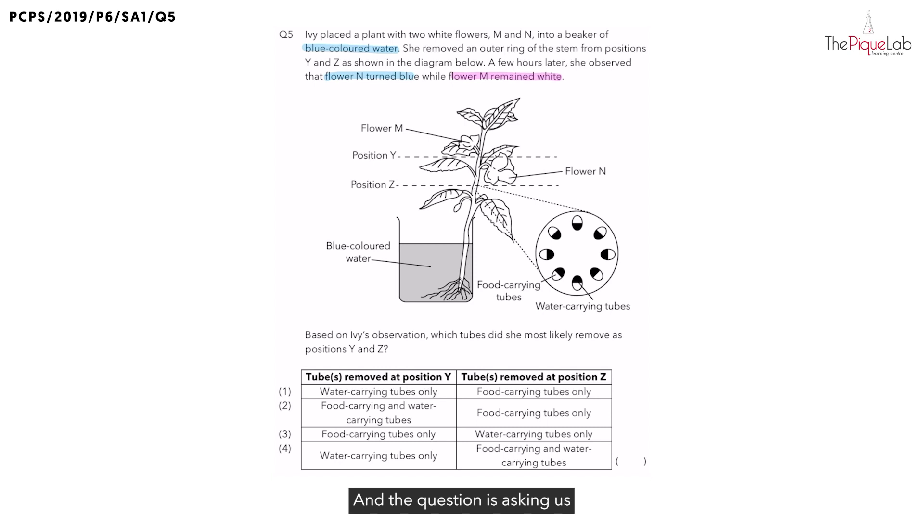And the question is asking us, which tubes did she most likely remove at positions Y and Z? So, if we were to look at the diagram above, we know that flower N turned blue. Hence, was it able to receive the blue colored water? Yes.